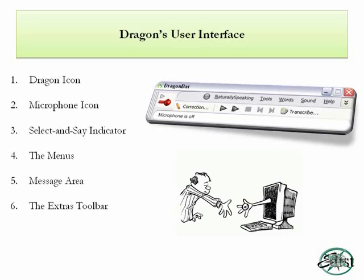Once you've gone through and created your profile and set up training, you're going to get the Dragon Bar. This is the user interface — this is how we can control the system. There are several different ways to view the Dragon Bar. The main thing to focus on is the red microphone. The red microphone controls speech recognition versus just talking. When that microphone is red, Dragon is not going to try to transcribe what you're saying. However, as soon as you activate that microphone, whatever you say will be transcribed into whatever application you have open.